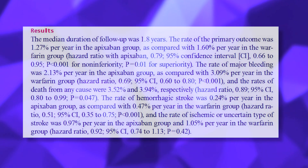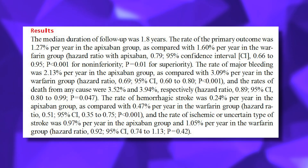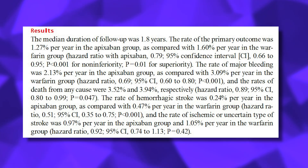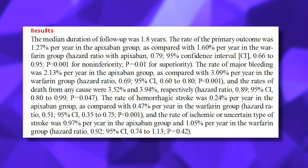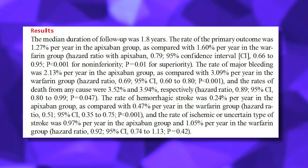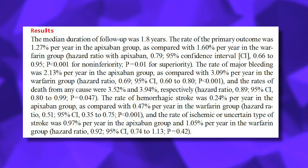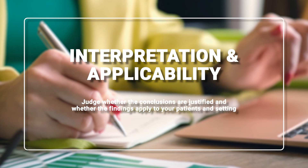For ARISTOTLE, the headline numbers from the abstract: for the primary outcome of stroke or embolism, the rate was 1.27% per year with apixaban versus 1.60% per year with warfarin. The hazard ratio was 0.79, 95% confidence interval 0.66 to 0.95, with p less than 0.001 for non-inferiority and p equals 0.01 for superiority. The bottom line is that apixaban is not only non-inferior but statistically superior for the primary efficacy outcome, with a modest but clinically relevant reduction in stroke and systemic embolism, a substantial reduction in major and intracranial bleeding, and a small reduction in all-cause mortality. The confidence intervals are relatively tight, suggesting good precision.